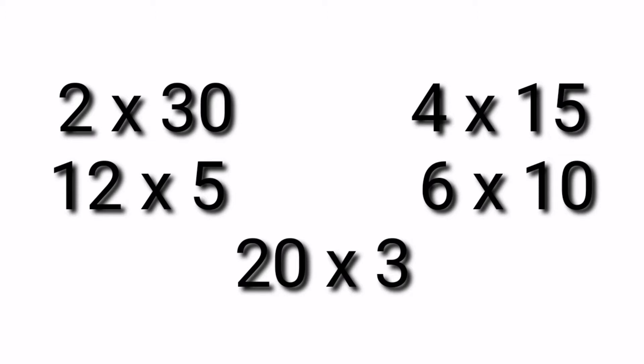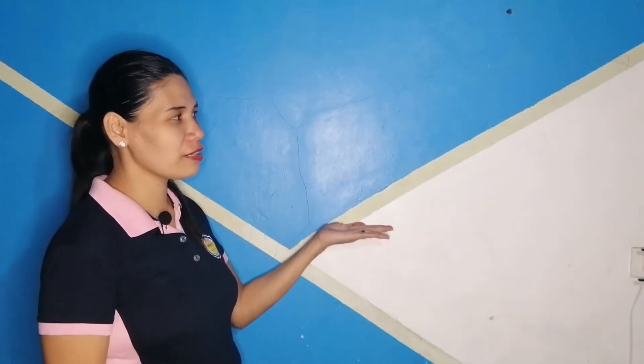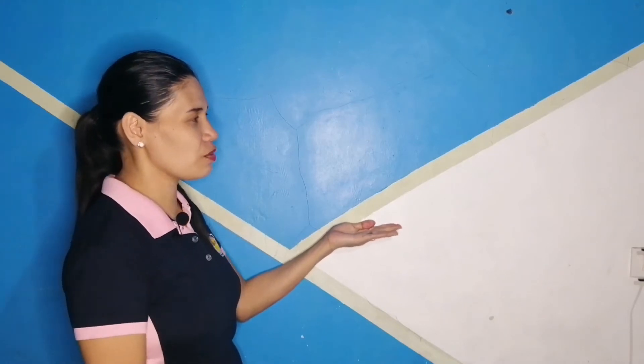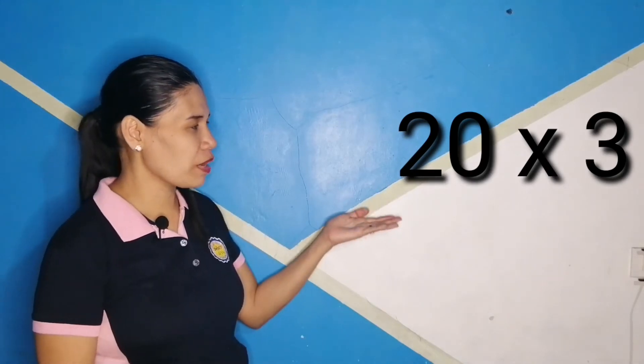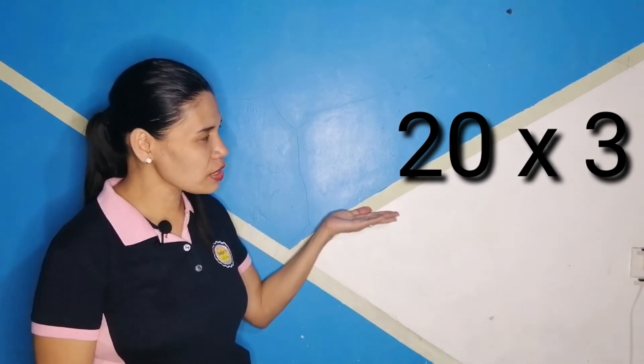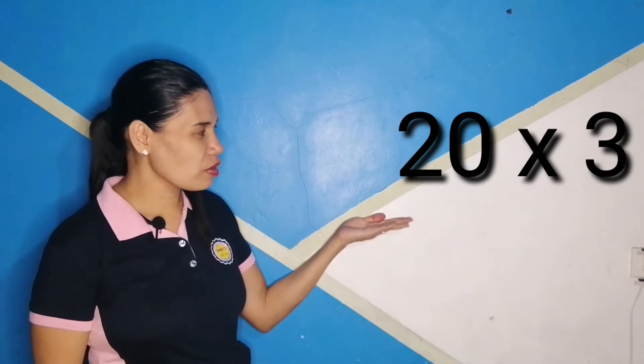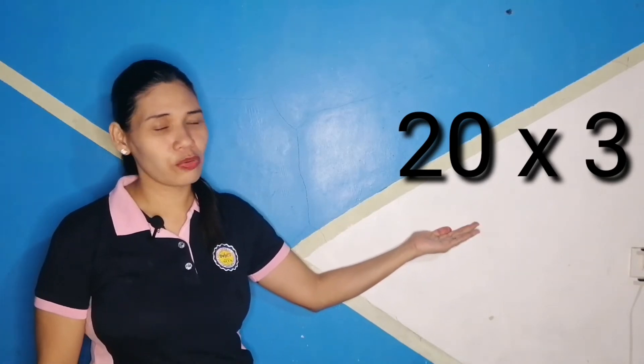Six times ten can be used as a factor pair of sixty. Six times ten equals sixty, so six and ten are factors. Meaning, if you divide sixty into six groups, there are ten members each. If you divide sixty into ten groups, there are six members each. Another factor pair is twenty times three — twenty times three equals sixty. If you divide sixty into twenty groups, there are three members each. If you divide sixty into three groups, there are twenty members each.